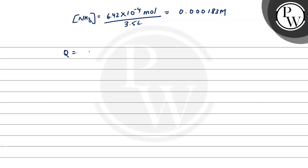Now we calculate the reaction quotient. Qc equals the concentration of NH3 squared divided by the concentration of N2 times the concentration of H2 to the power 3.